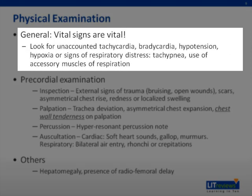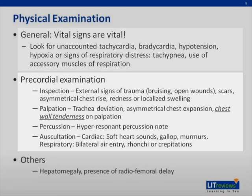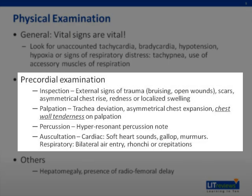Vital signs: check the heart rate and blood pressure against age-related norms. Look for signs of respiratory distress. When examining the chest, inspect for signs of trauma. Palpate for tracheal deviation and localize any chest wall tenderness. This is especially important because if there is chest pain reproducible on palpation, it is very likely to be musculoskeletal in nature.